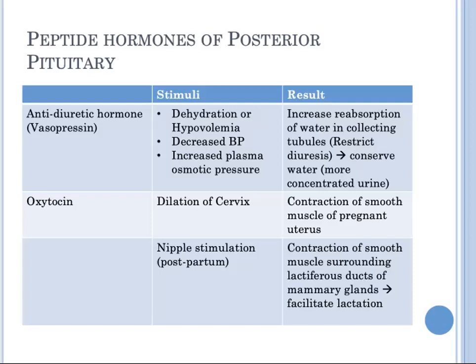The main function of ADH is to conserve water by restricting diuresis during periods of dehydration and hypovolemia. ADH increases reabsorption of water in the collecting tubules, producing a more concentrated urine. Decreased blood pressure or increased plasma osmotic pressure also triggers ADH secretion. Dilation of the cervix in pregnancy results in release of oxytocin, leading to contraction of uterine smooth muscles during labor. During the postnatal period, oxytocin acts on smooth muscles surrounding the lactiferous ducts of the mammary gland to facilitate lactation.